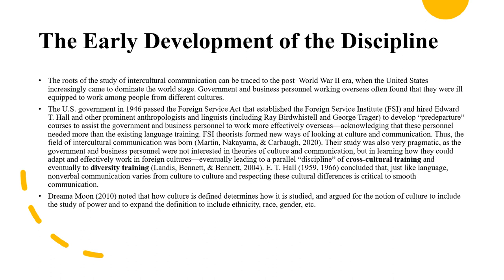Dream of Moon made a really significant observation that has defined ways in which the discipline has grown, noting that how culture is defined determines how it is studied. In other words, the way we think about culture determines our methodology for studying it. Moon argued for the notion of culture to include the study of power and to expand the definition to include ethnicity, race, gender, and other identity markers — rather than just thinking about different countries as monocultures.